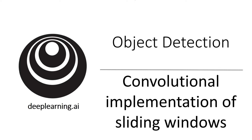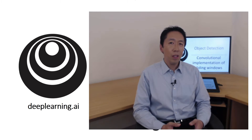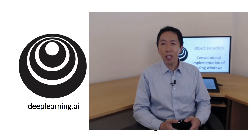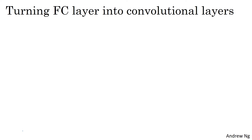In the last video, you learned about the sliding windows object detection algorithm using a ConvNet, but we saw that it was too slow. In this video, you'll learn how to implement that algorithm convolutionally. To build up to the convolutional implementation of sliding windows, let's first see how you can turn fully connected layers in your neural network into convolutional layers.